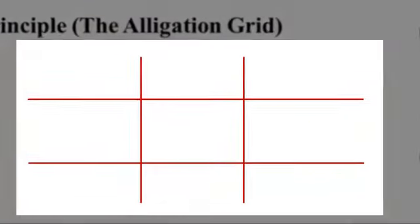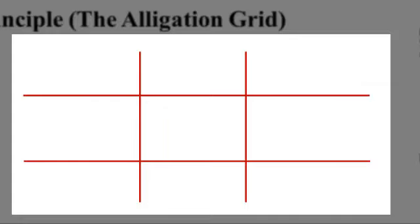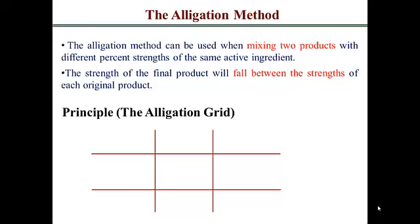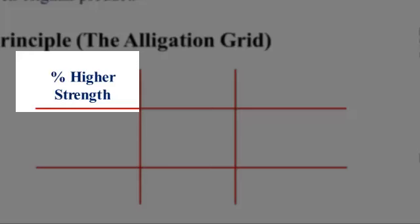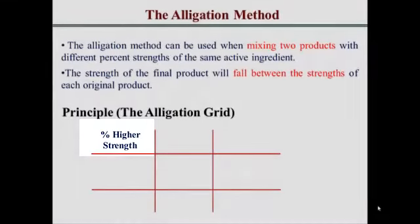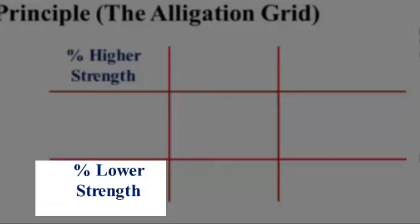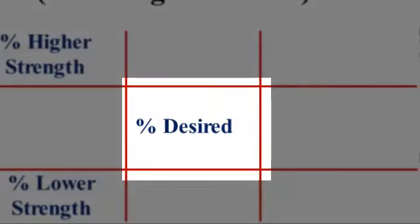The allegation grid is very similar to a tic-tac-toe setup. The important thing is to know what goes into each square and the mechanics of how it works. In the top left corner, you have the percentage strength of your higher concentration product — the one with a concentration higher than your final product. In the bottom left corner, you have the product with the lower percentage strength. In the middle, you put the percentage strength of your desired product. That always goes in the middle.